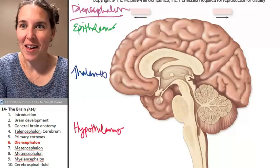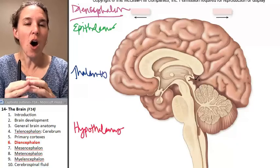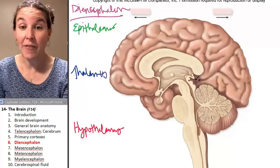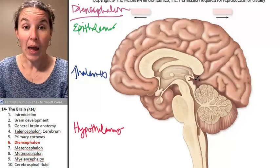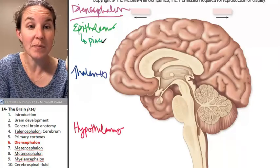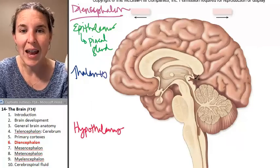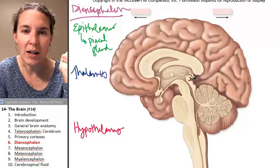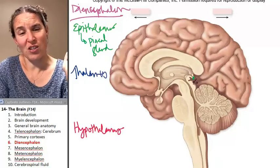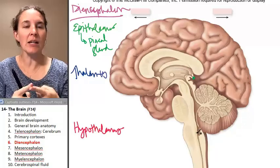Let's talk about the epithalamus first. There's one structure we need to know from the epithalamus, and that would be the pineal gland. I'm going to color it in with green. The pineal gland is a gland, a structure that produces melatonin.